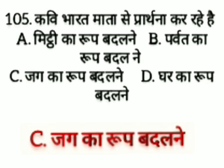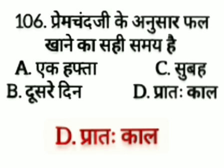Kavi Bharat Maata se praarthana kar rahe hai — option A: miti ka rup badalne, option B: parvat ka rup badalne, option C: jag ka rup badalne, option D: ghar ka rup badalne. The answer is option C, jag ka rup badalne.